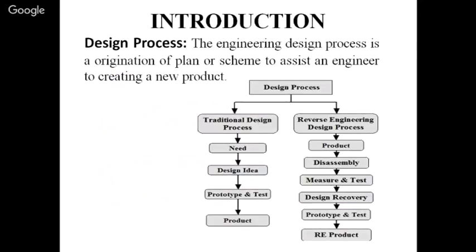As per the definition of the design process, the engineering design process is an origination of a plan or scheme to assist an engineer to create a new product. In the traditional design process, we require a specific need, then design data and design ideas, then a prototype of the particular need, then testing, and after that we have a final product.